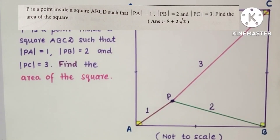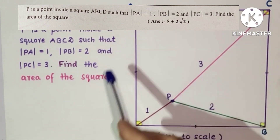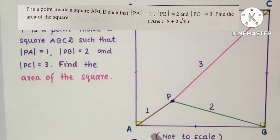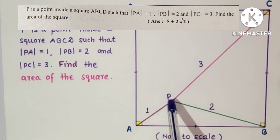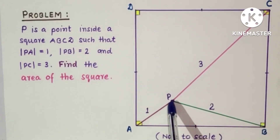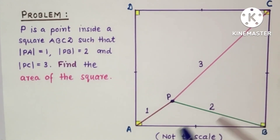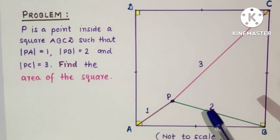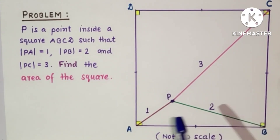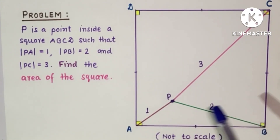Hello friends and viewers, welcome to all of you. In today's problem we are given a square ABCD of unknown side, and P is any point inside this square such that the length of PA is 1 unit, length of PB is 2 units, and PC is 3 units. We have to find the area. We will discuss two methods: one is the geometry method and the other is the trigonometry method.